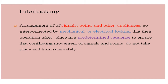A signal controls the movement of trains. Points allow a train to change from one track to another — from main line to branch line or vice versa — using points and crossings. Unlike a car, which can be steered, a train's wheels tend to move in a straight line. So adjustments must be made on the running track itself to direct the train in the desired direction.